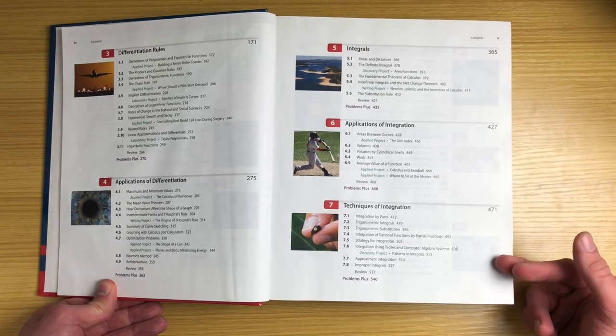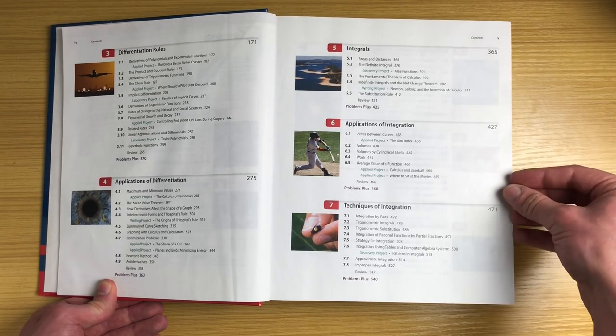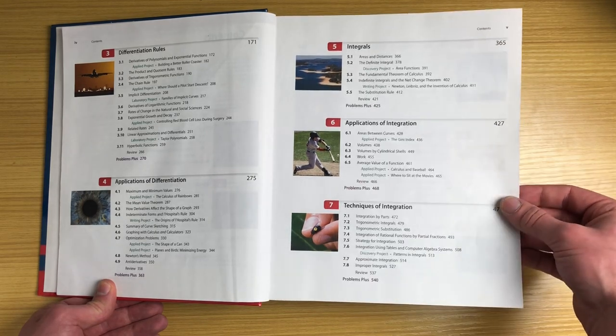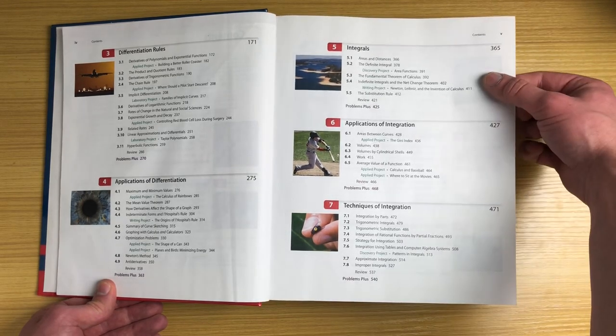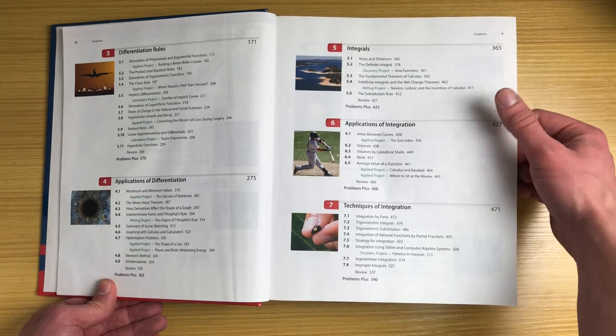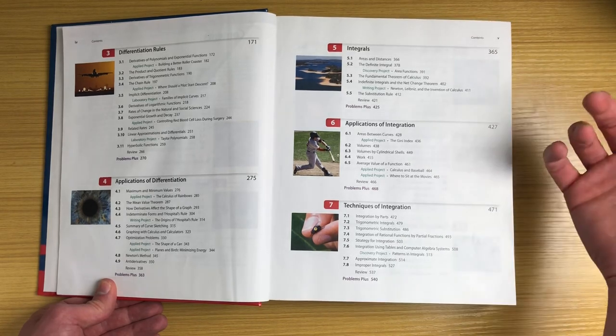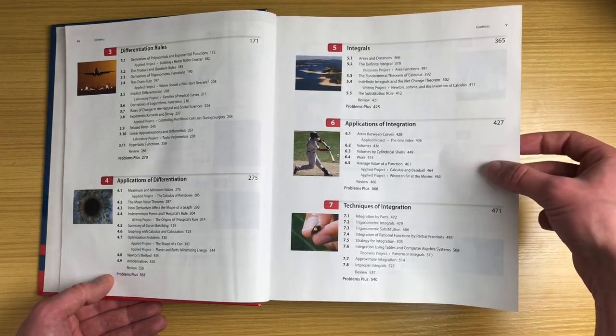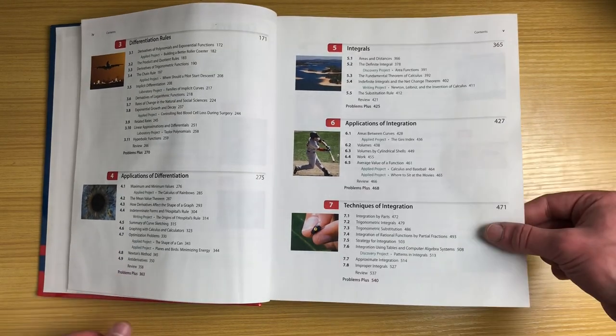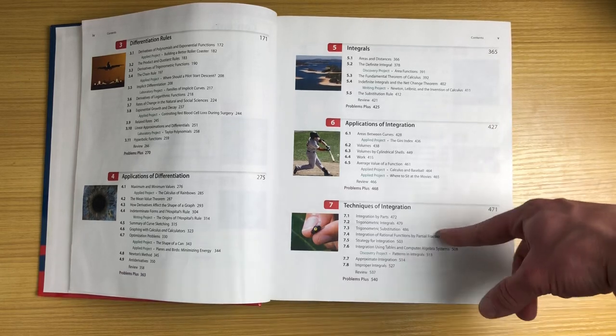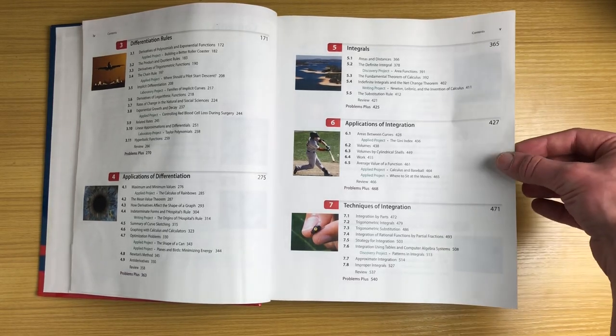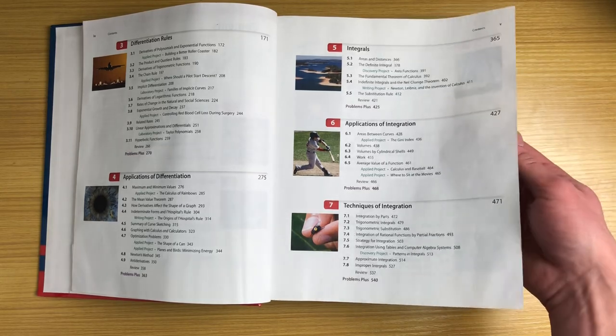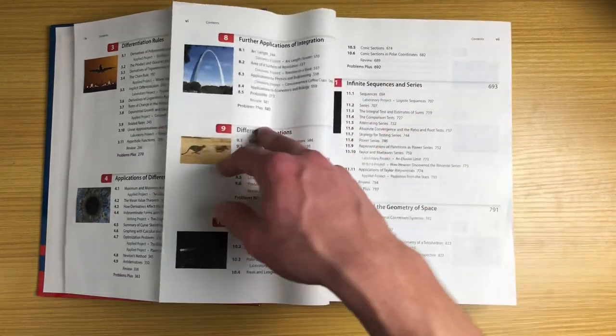Chapters five, six, and seven, the main thing of calculus - integrals, integrals applications, and techniques of integration. Here we're doing anti-derivatives and the fundamental theorem of calculus and applications - areas, volumes, finding the work and averages. Then techniques of integration, usually where you start calc two, learning things like integration by parts and partial fractions.